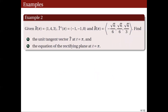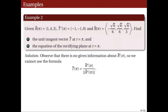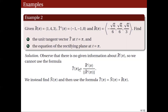Our next example concerns finding the unit tangent vector T at t = φ and the equation of the rectifying plane at t = φ, given r(φ) = (1, 4, 3), T'(φ) = (−1, −1, 0), and B(φ) = (−√6/6, √6/6, √6/3). Observe that there is no given information about r'(φ), so we cannot directly use the formula for the unit tangent vector. Instead, we first find N(φ), then use the formula T(φ) = N(φ) × B(φ).